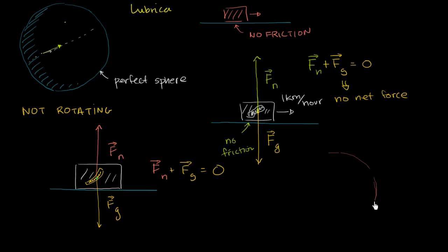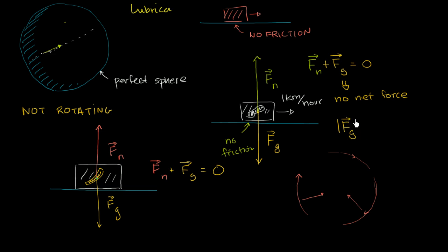Since the sock has a circular path — looking at a cross-section from the side, it traces a circle — it is constantly being accelerated inward. There is centripetal acceleration going on. In order for that inward acceleration to exist, there must be some net inward force. So the magnitude of the force of gravity must be greater than the magnitude of the normal force.